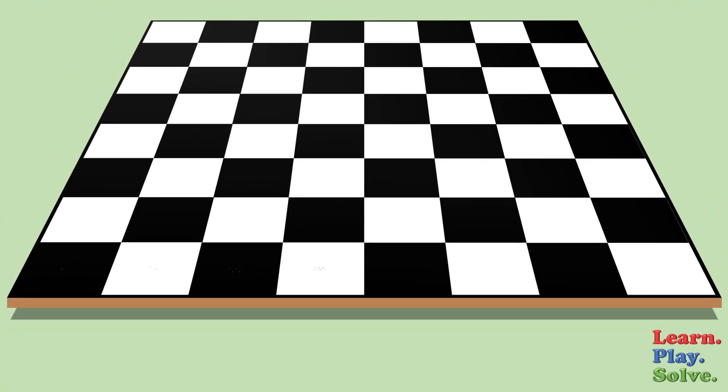Keep doing this. For every square, place twice as many grains as there are in the previous square. If you do this for all 64 squares, how many grains of sand will be on the chessboard?